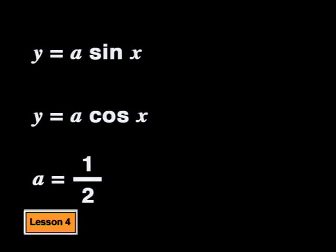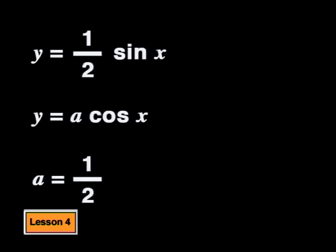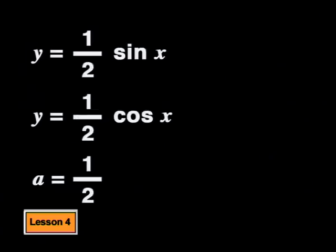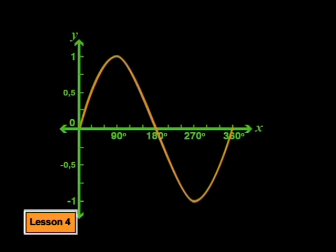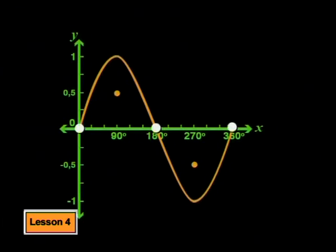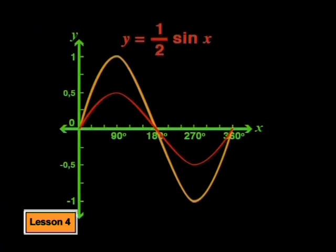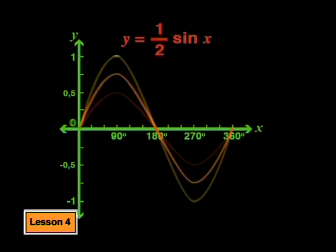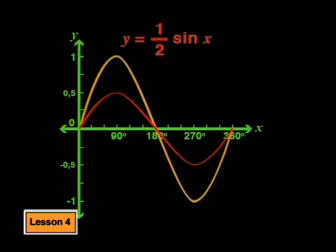What do you think the graph will look like if we use an a value of one half? The new formulas will be y equals one-half·sine(x) and y equals one-half·cosine(x). The new graphs look the same as the parent graphs, except that all y values stretch by a factor of one half. The maximum point on the parent sine graph moves from 1 down to one half, and the minimum becomes negative one half. The x-intercepts stay the same because 0 times one half is still 0. Each point is half the distance away from the x-axis.